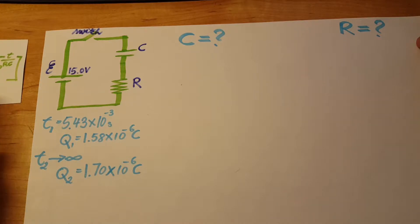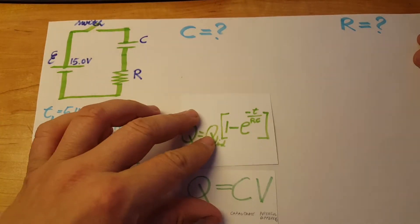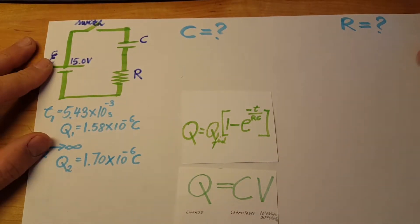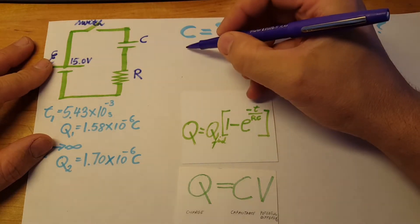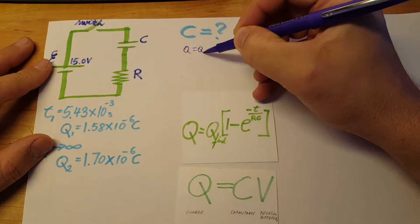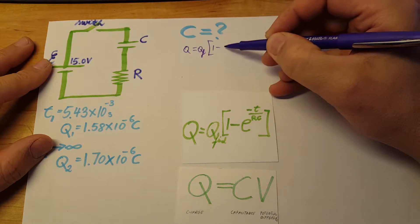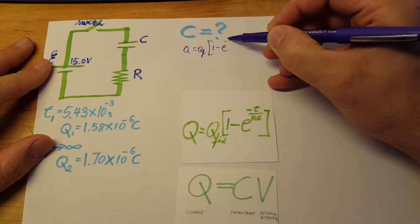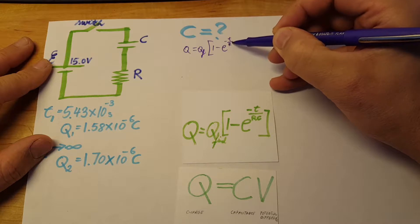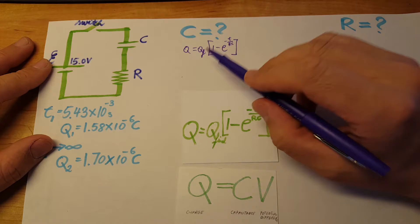For this we're gonna use this formula: Q equals Q final times one minus e to the power of negative t over RC.